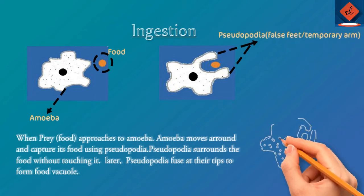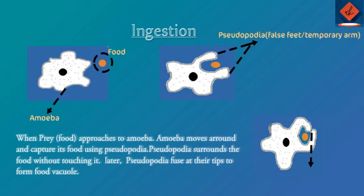Pseudopodia is called false feet or temporary arms — finger-like structures. The pseudopodia fuse and join together. The food comes inside and a food vacuole is generated.